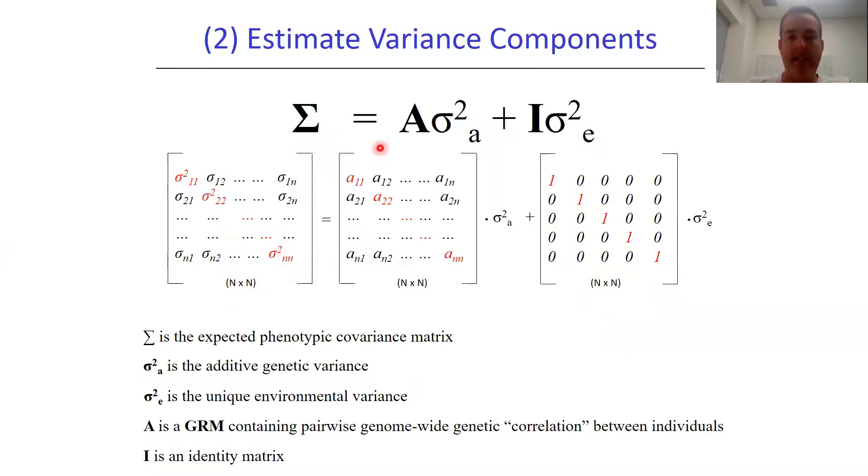It's going to be decomposed into a genetic part and a residual part. The residual part, which is easier to understand, has a single variance component, σ²_E, indexed by the identity matrix I. This is ones down the main diagonal and zeros everywhere else.